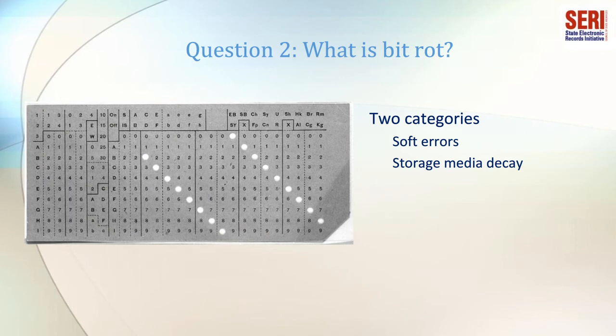Question 2: What is BitRot? BitRot, also known as data degradation, data decay, or data rot, is a gradual, silent corruption of electronic data due to an accumulation of non-critical failures in a data storage device. BitRot is not the same thing as file format, software, or hardware obsolescence. There are two basic categories of BitRot: soft errors and storage media decay.